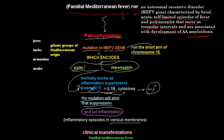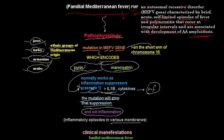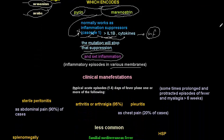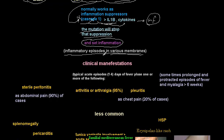The mutation in the MEFV gene occurs in ethnic groups of Mediterranean origin, such as Jews, Turks, Armenians, and Arabs. You can suspect Familial Mediterranean Fever in these ethnic groups. The end result of FMF pathophysiology is inflammatory episodes in various membranes. Now let's move to the clinical manifestations.